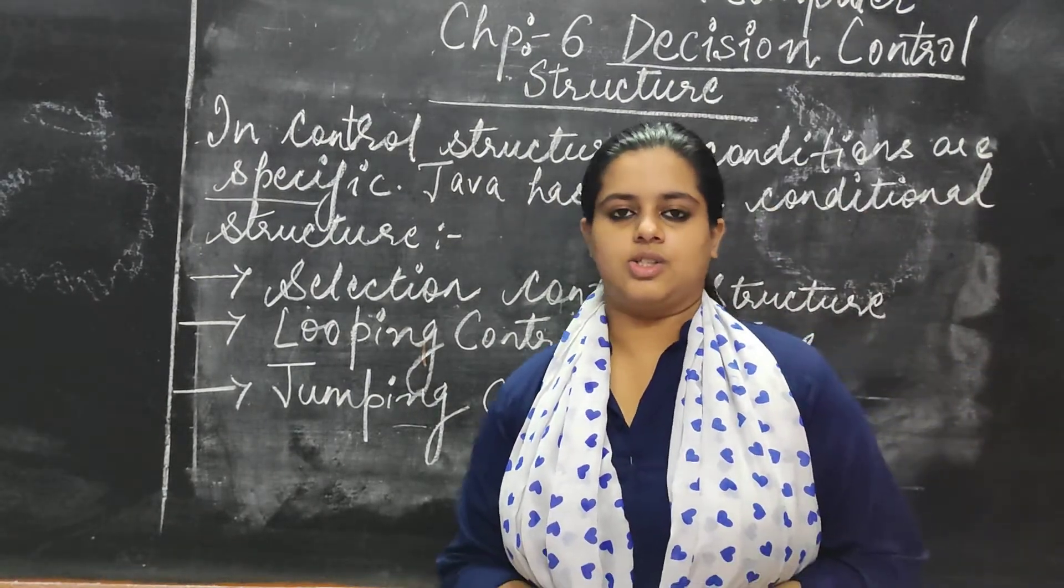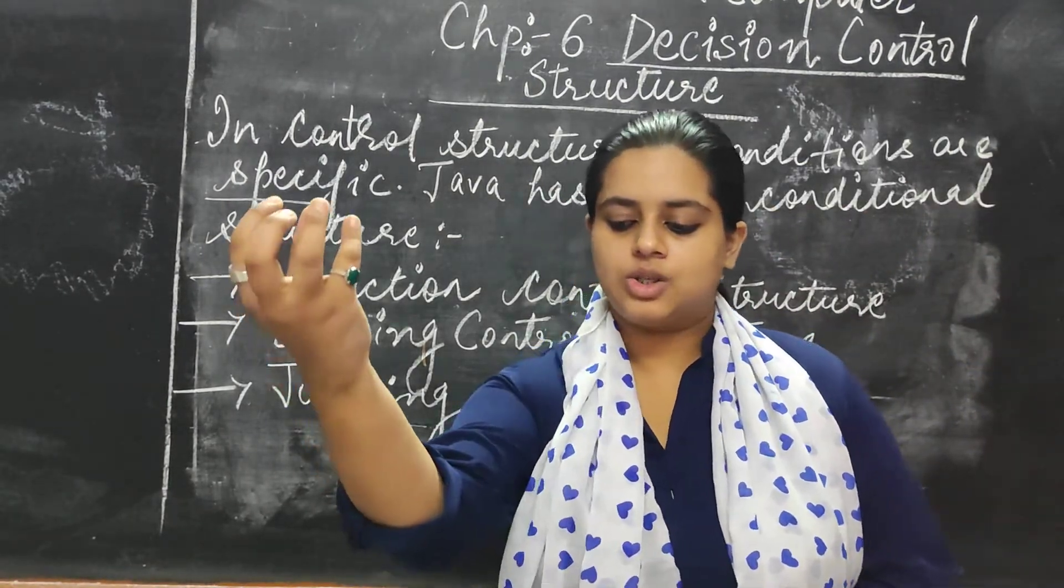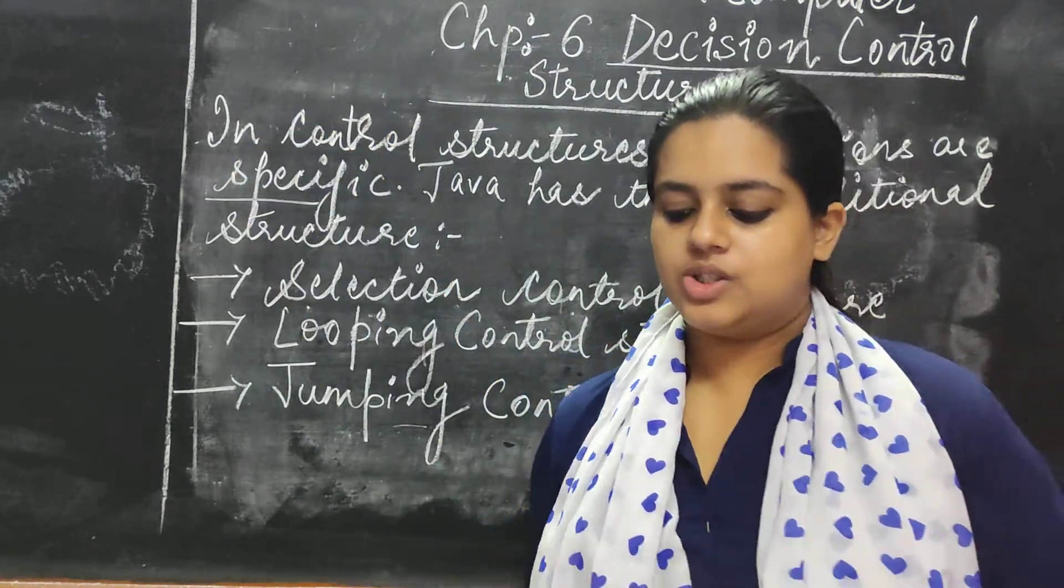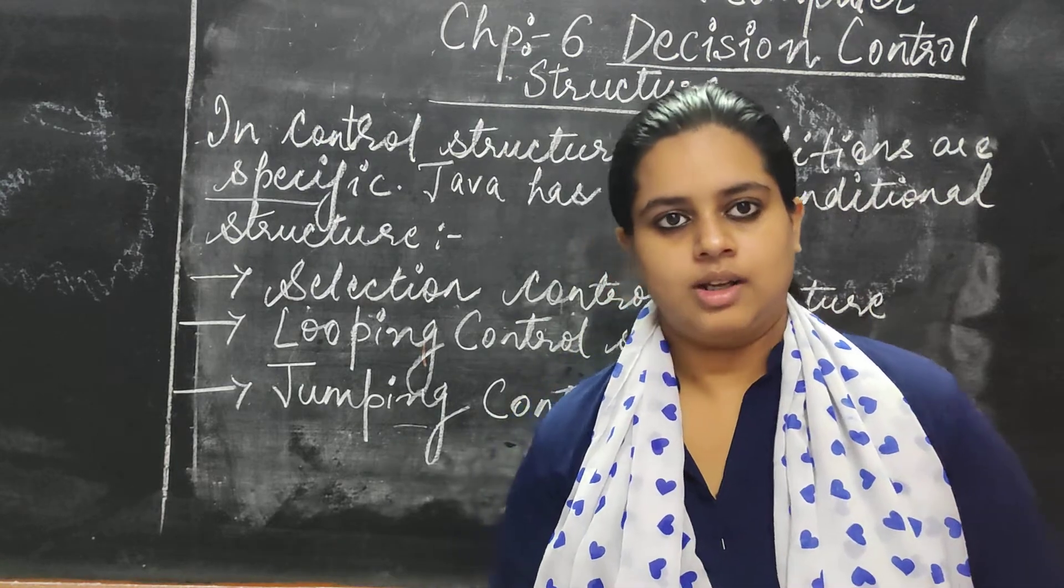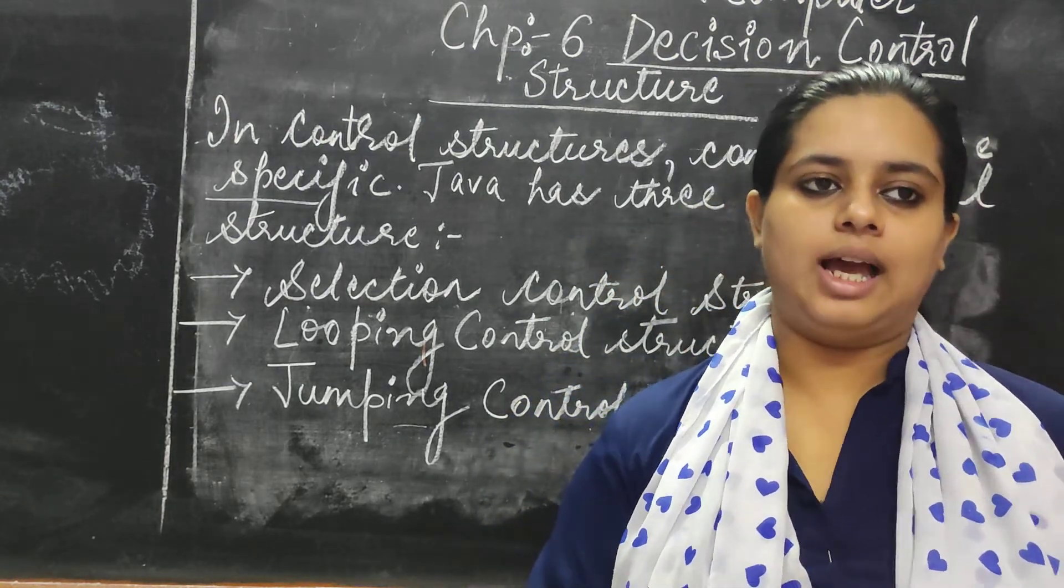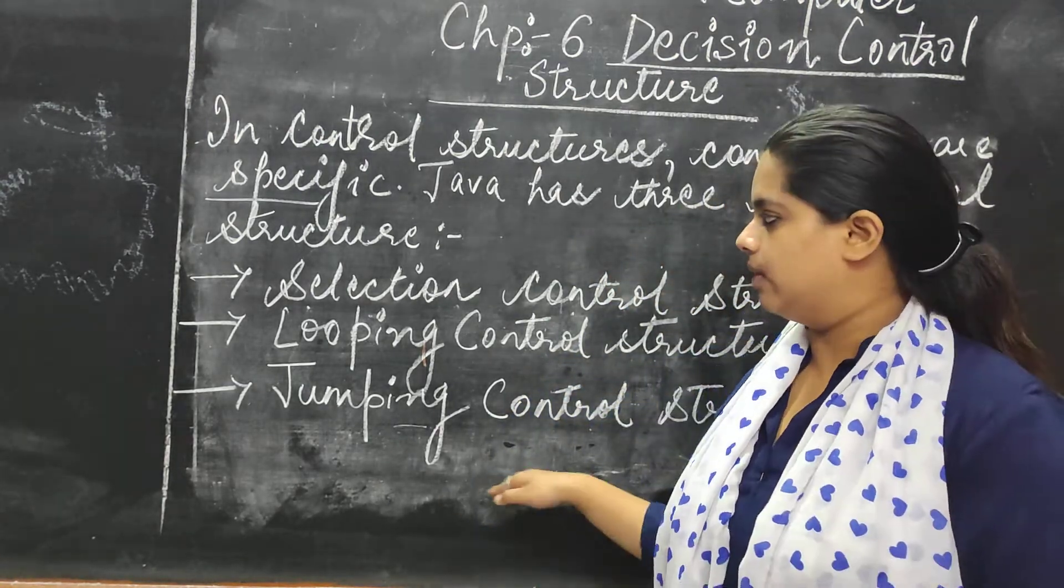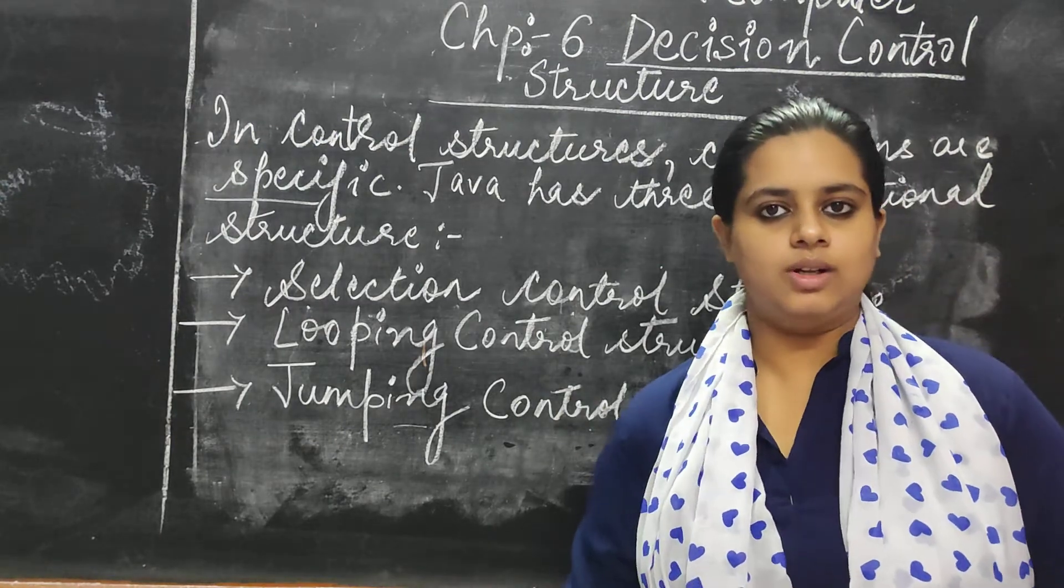In your selection control structure, a program is controlled through a location which depends on the result of the conditional expression. So children, in the next video I will be discussing further about these three control structures.